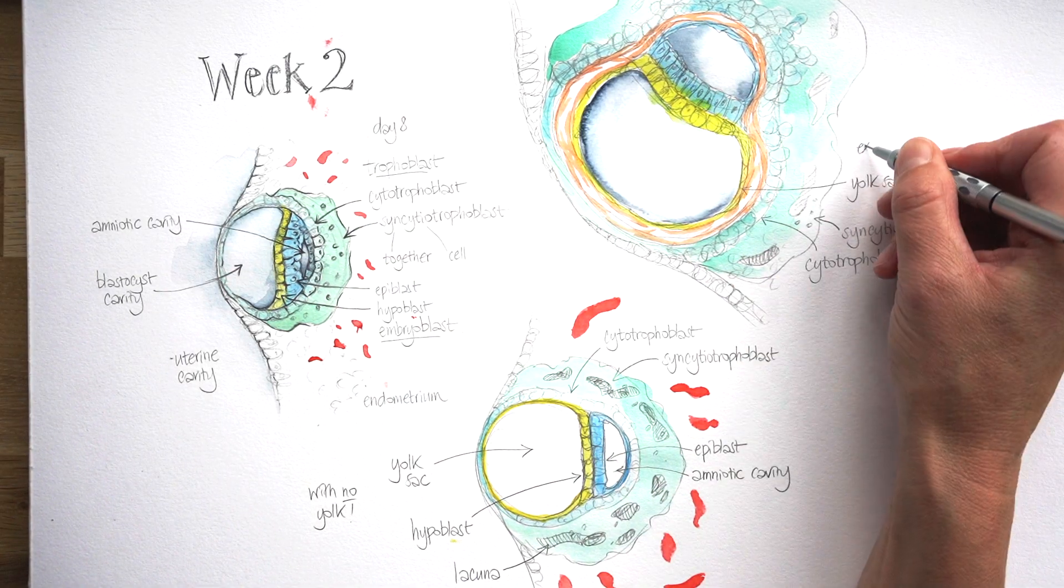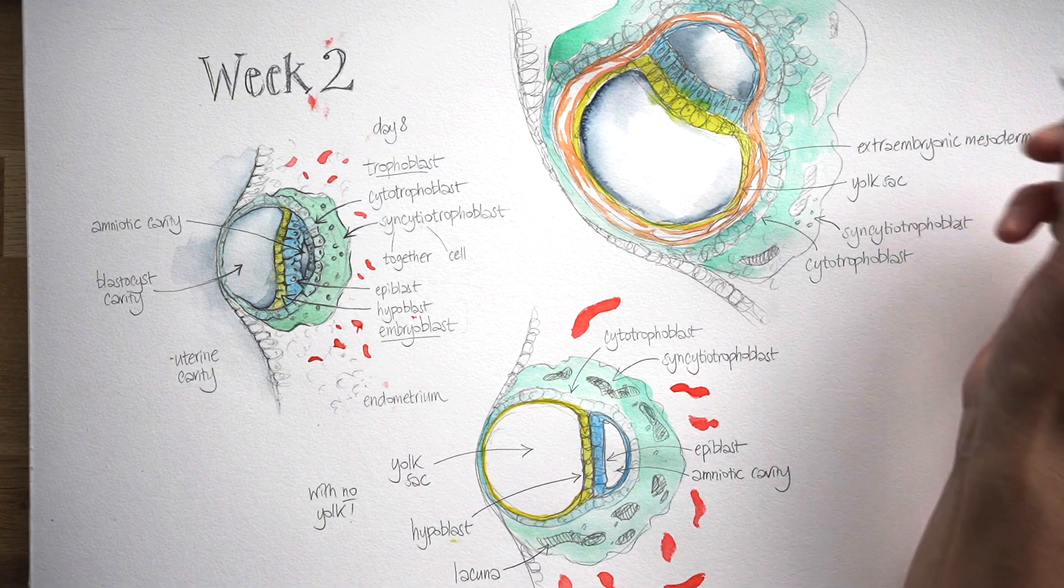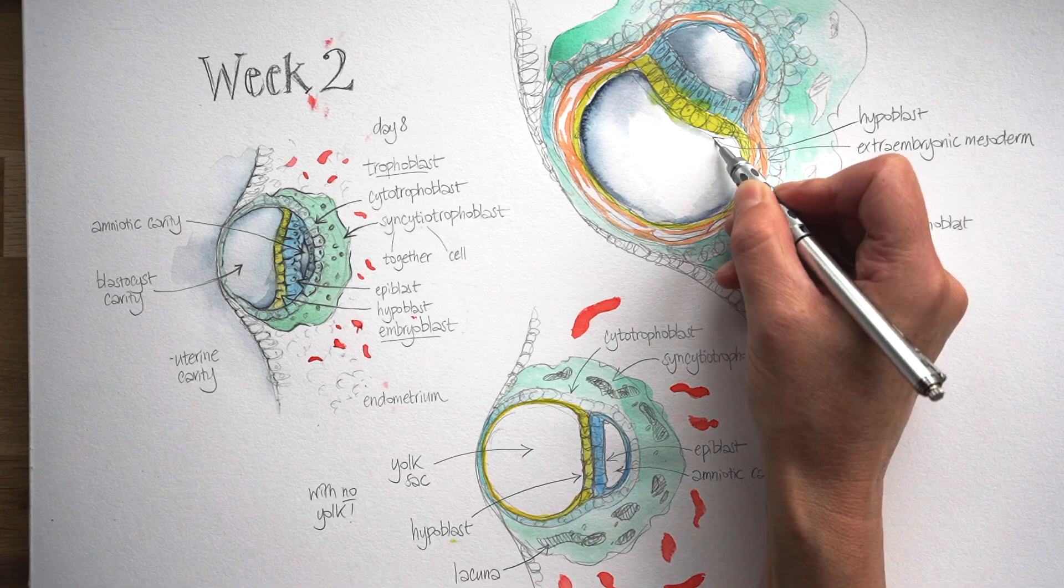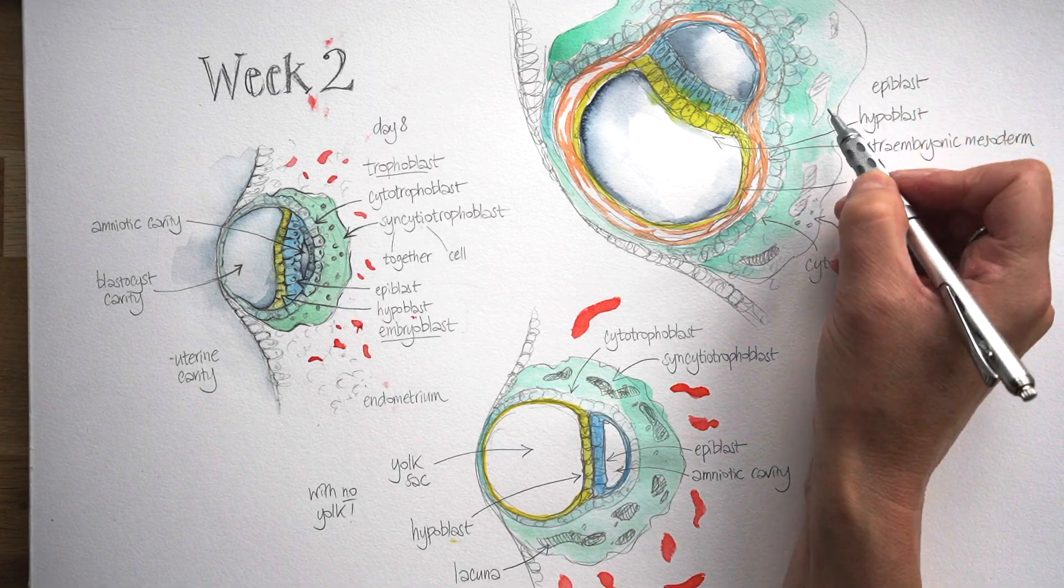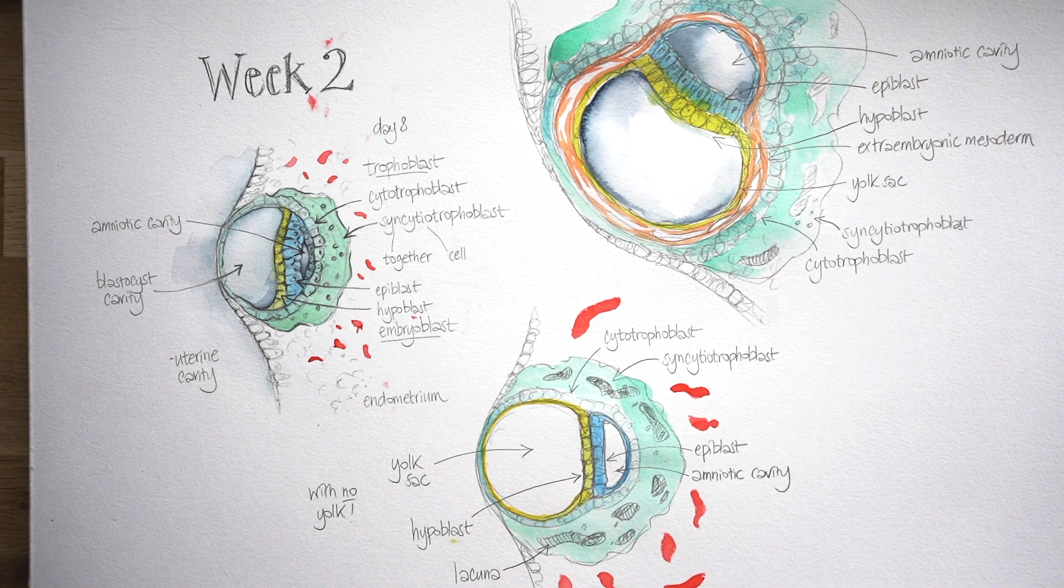So let's label some of these things up. There's the lining of the yolk sac. Here's this new layer of tissue. Now this is mesoderm outside the embryo, so we call it extraembryonic mesoderm. There's the hypoblast in yellow and the epiblast in blue facing the amniotic cavity.